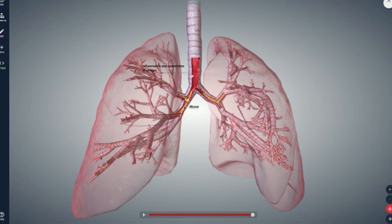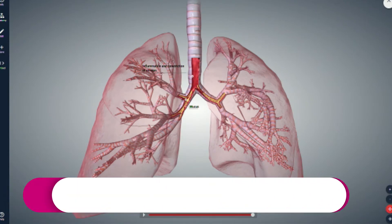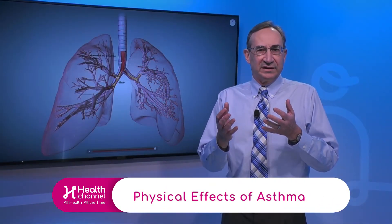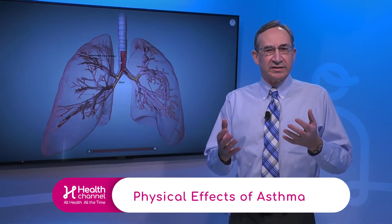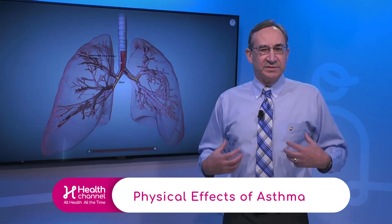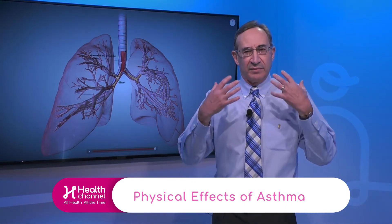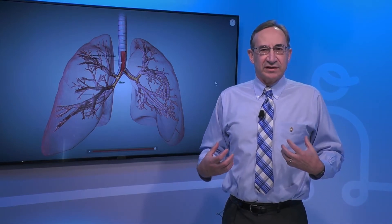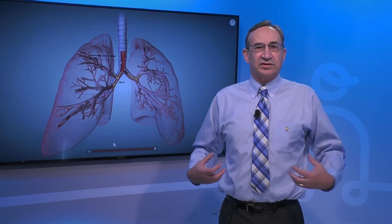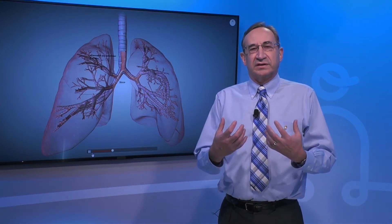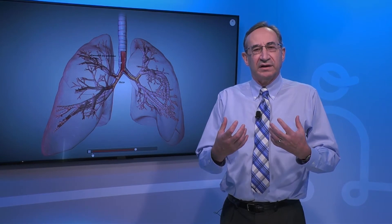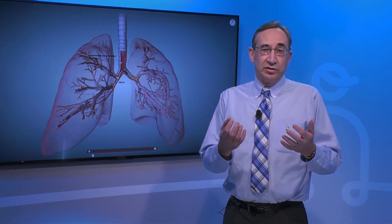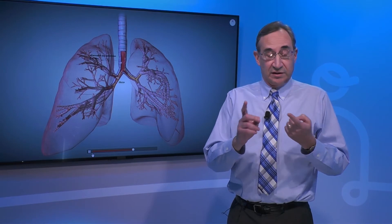What's going on in the lung is essentially something very simple: it's inflammation of the airways — the pipes that carry air from your mouth to the air sacs where gas exchange takes place, where oxygen goes into your body and carbon dioxide comes out. When you have inflammation of those tubes, it causes three things.